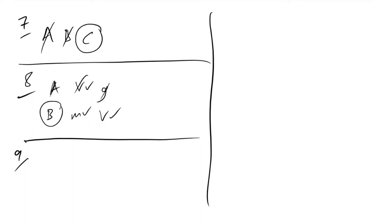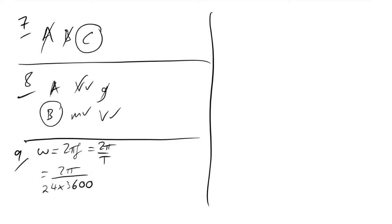Question 9: angular speed of a geostationary satellite. ω = 2π/T. A geostationary orbit has the same period as Earth's rotation: T = 24 hours = 24 × 3,600 s. This gives ω = 7.3×10⁻⁵ rad/s. The answer is B.